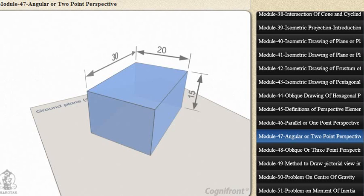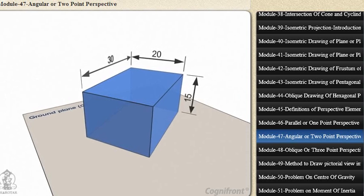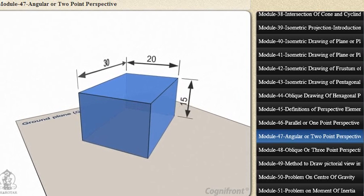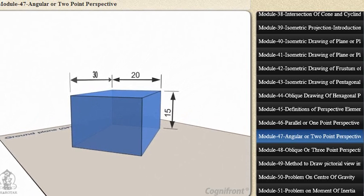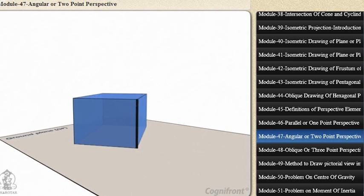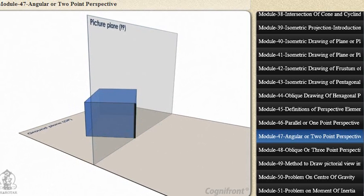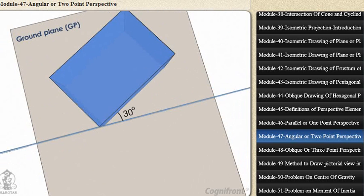Problem 19.4: A rectangular block 30mm × 20mm × 15mm is lying on the ground plane on one of its largest faces. A vertical edge is in the picture plane, and the longer face containing that edge makes an angle of 30 degrees with the picture plane.